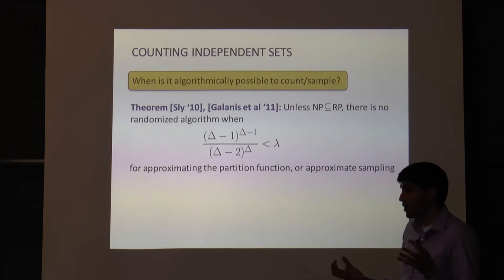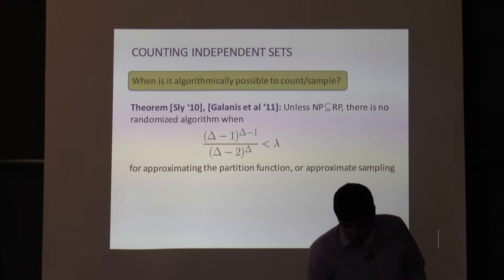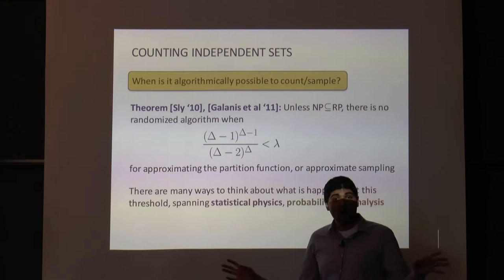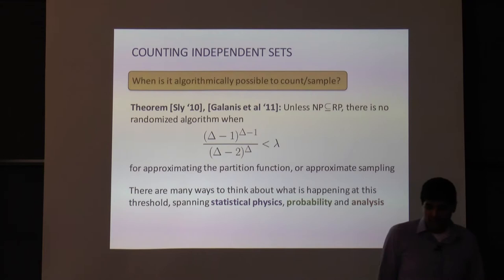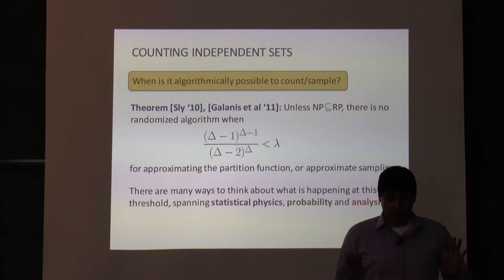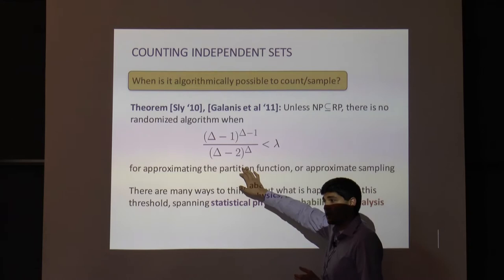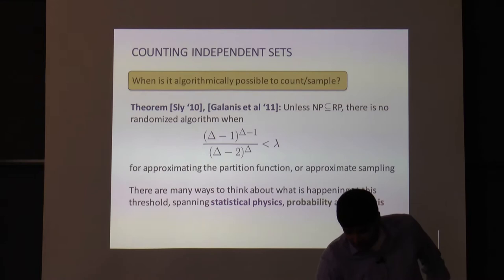We asked a basic question about approximate counting and sampling and got a strong, complete answer: it's possible if and only if lambda is smaller than this quantity. This is a great situation because there are many ways to think about this threshold spanning many different fields — approximate counting and sampling has a long and storied history in statistical physics, probability, and analysis. But this cohesive story becomes much more subtle in counting problems with higher order constraints.